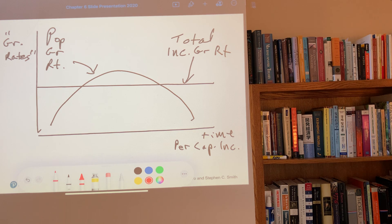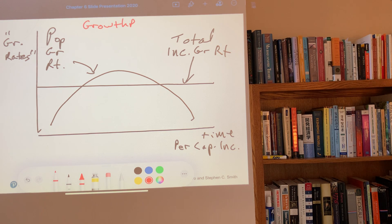But remember that growth per capita is approximately equal to, very close to equal to, the total income growth minus the population growth rates.